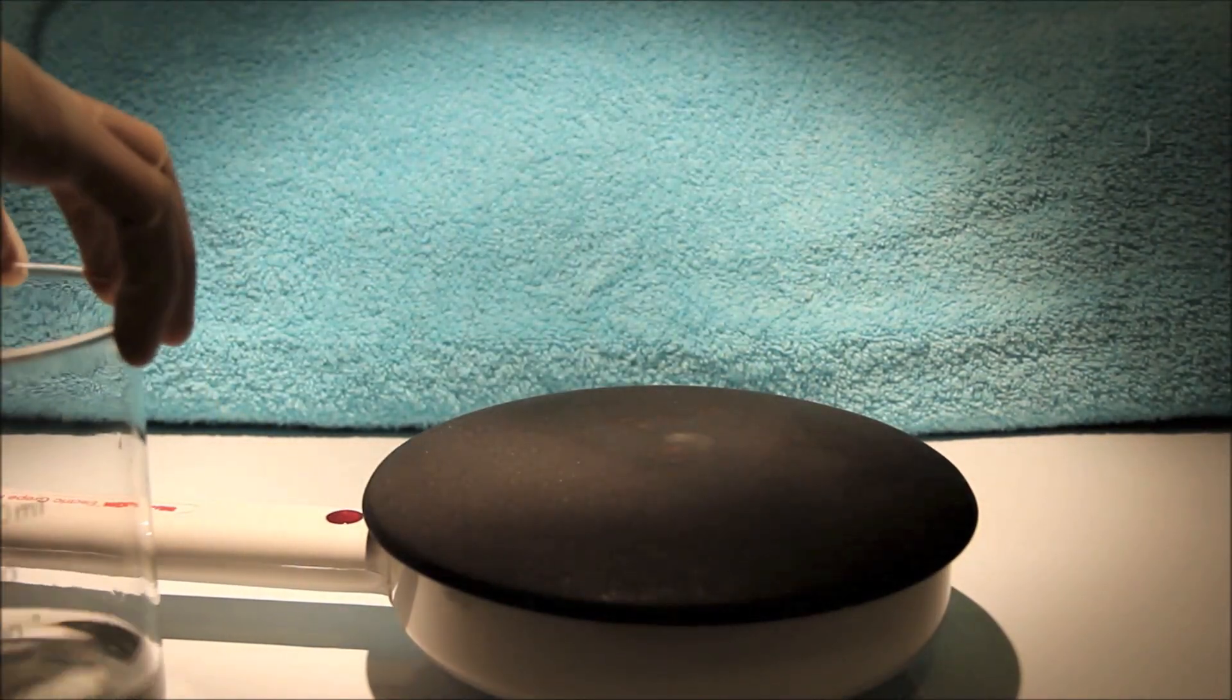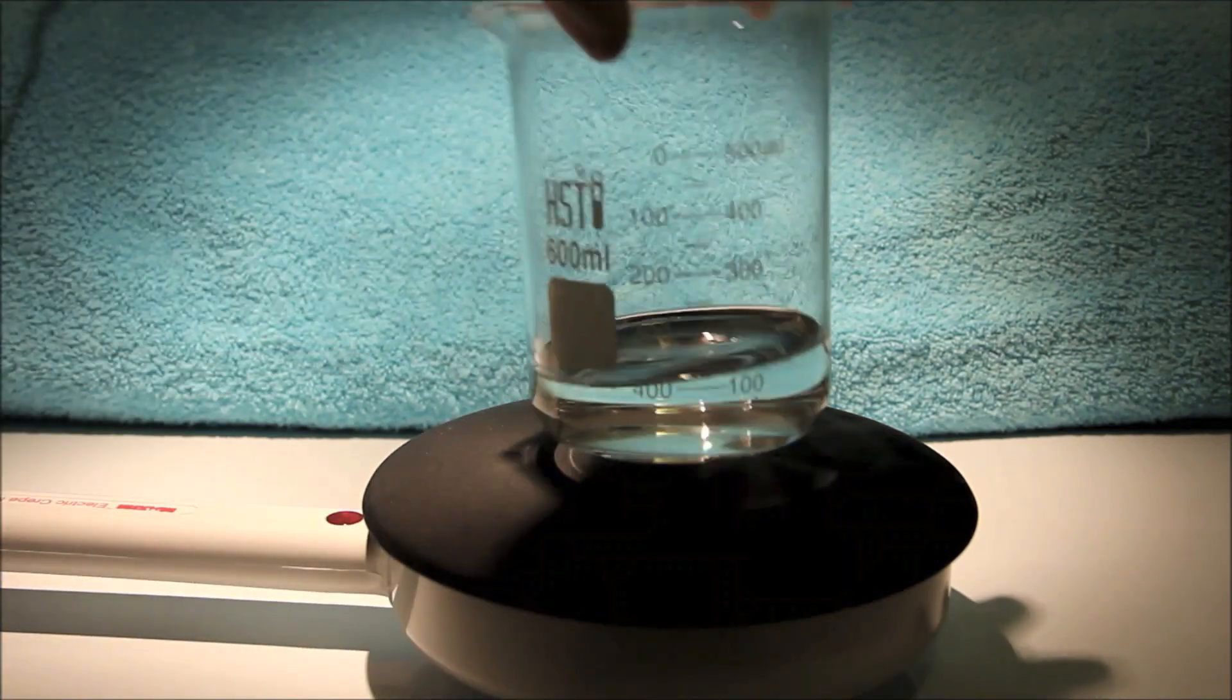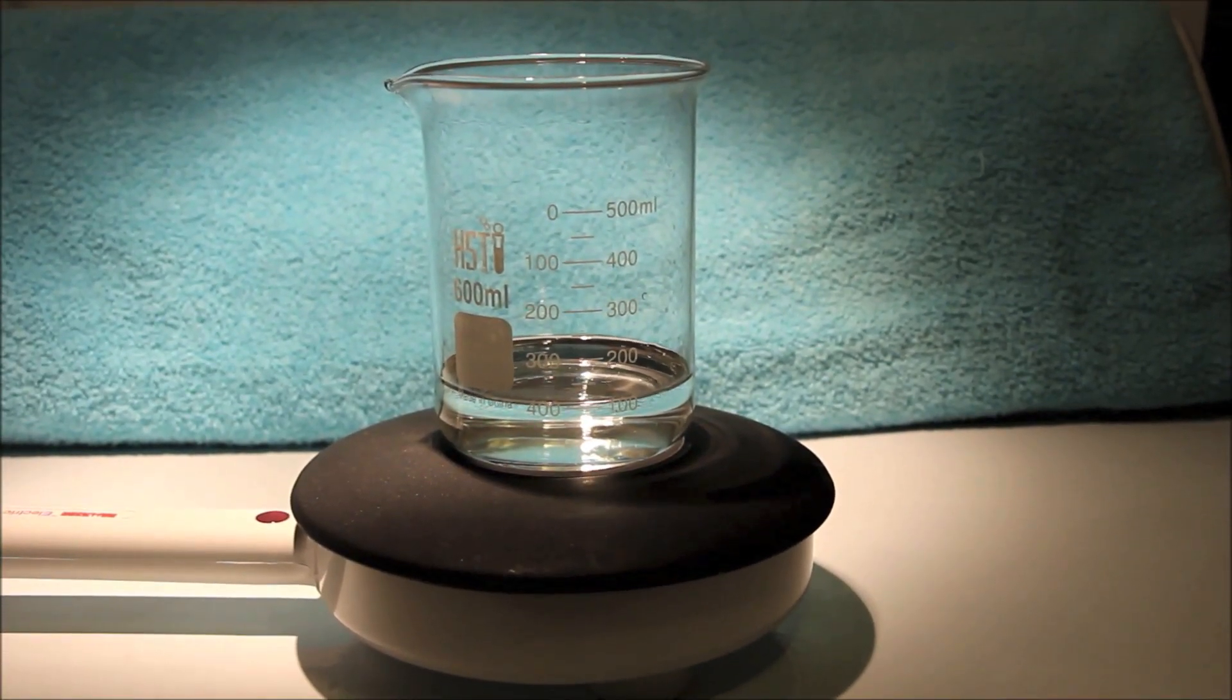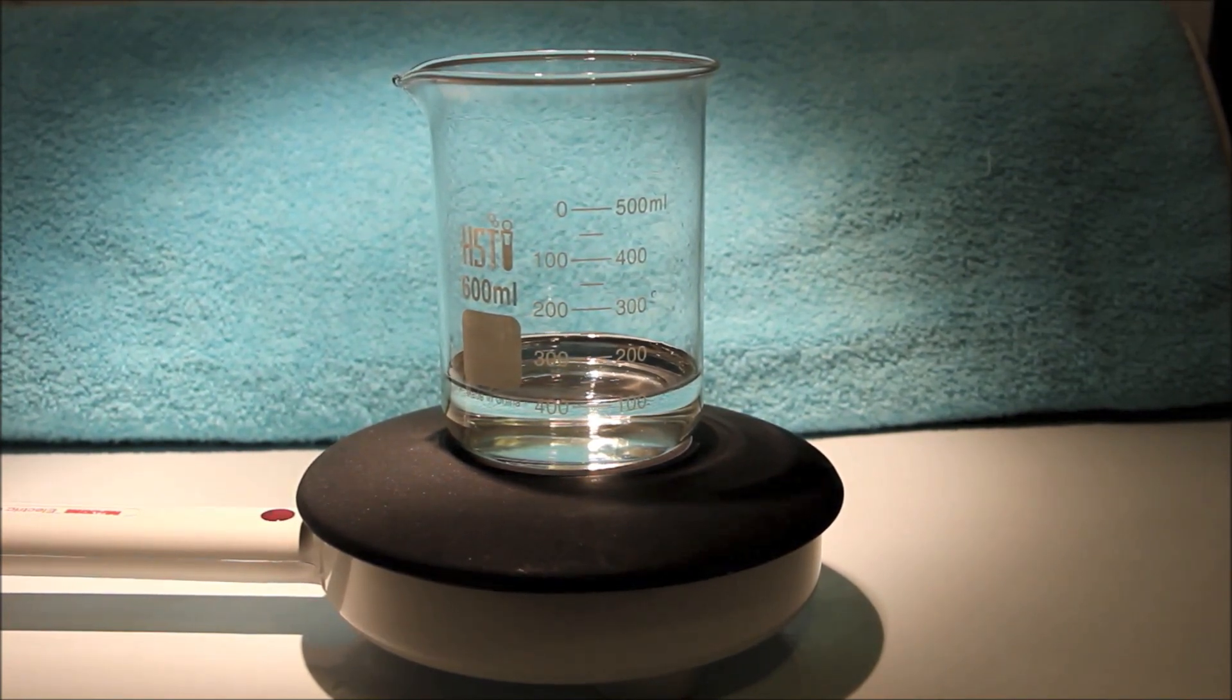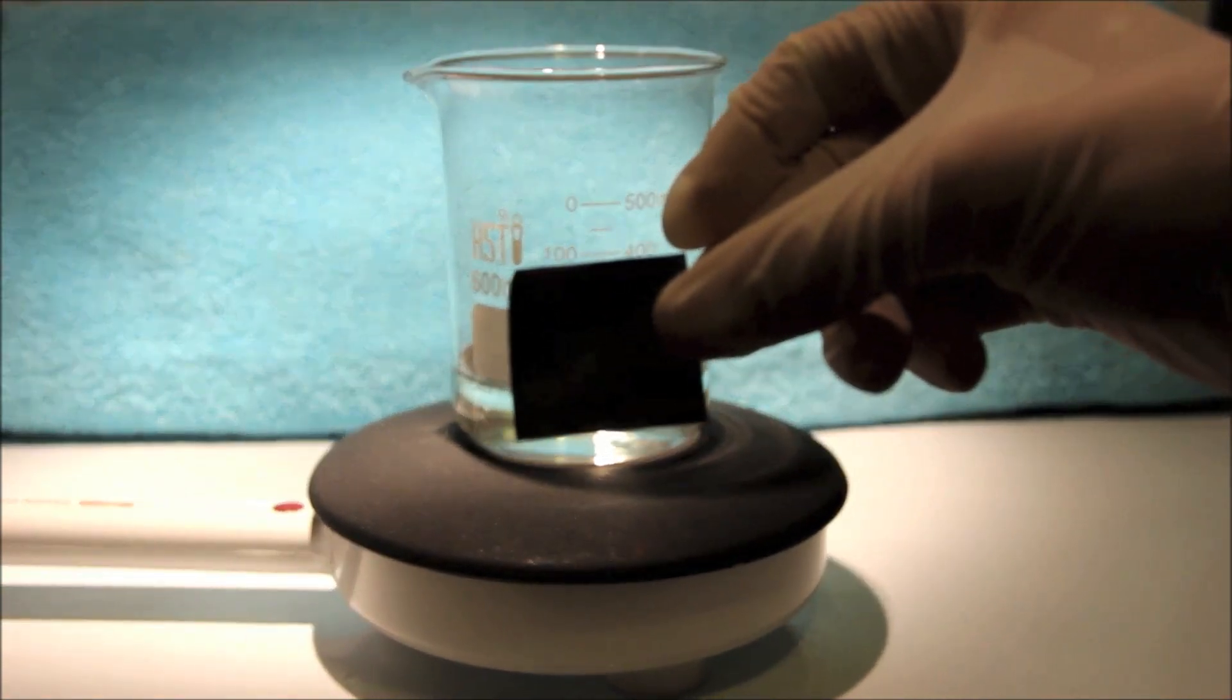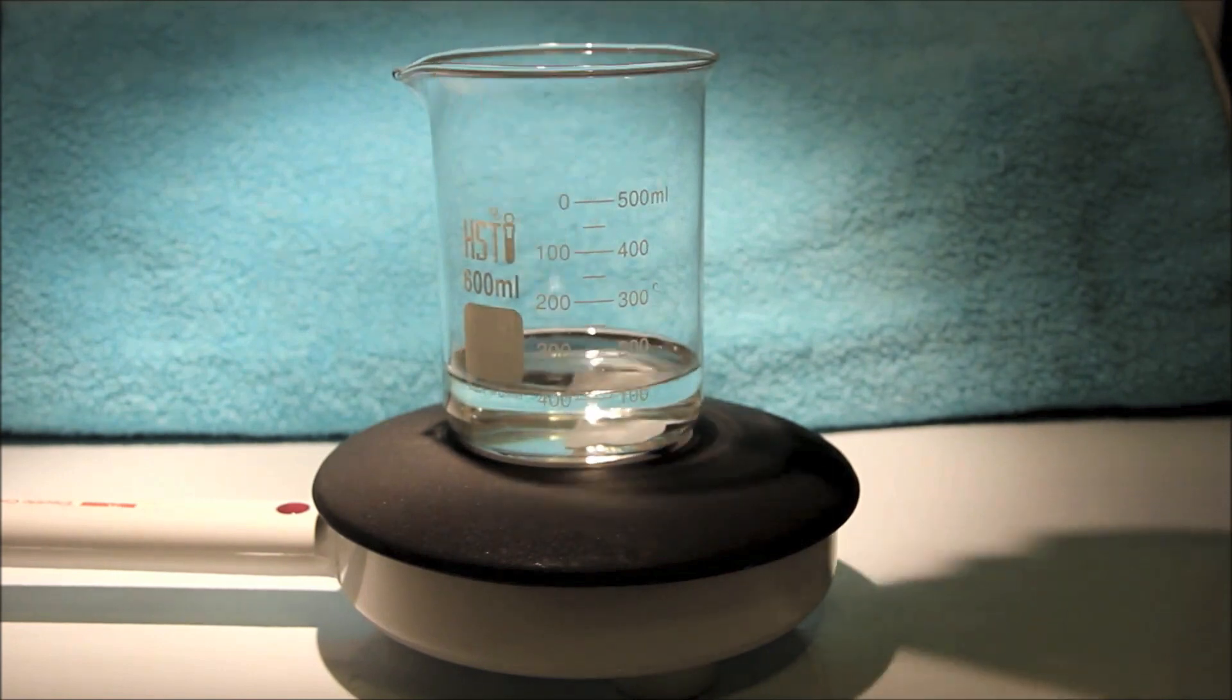And here I have a hot plate. Any suitable source of heat will do, as long as it gets the water to a boil. I'm going to place the beaker on the hot plate. Here I have a strip of zinc metal obtained from the inside of a lantern battery, following Nerd Rage's tutorial. I'll simply add the piece of zinc metal to the solution.